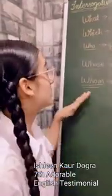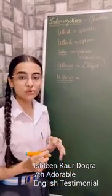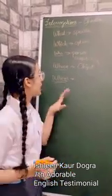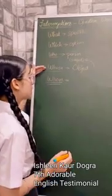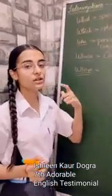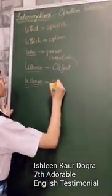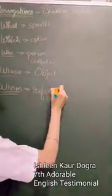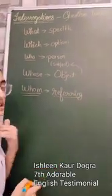Then comes 'whom'. Whom is another interrogator which is related to 'who'. It has a similar use to 'whose' — it is used to refer to the person that you are referring to. It is used to display or define the things or persons to which we are referring.